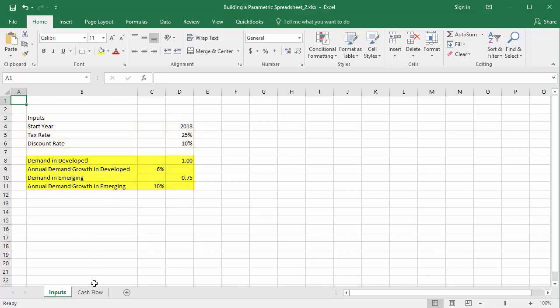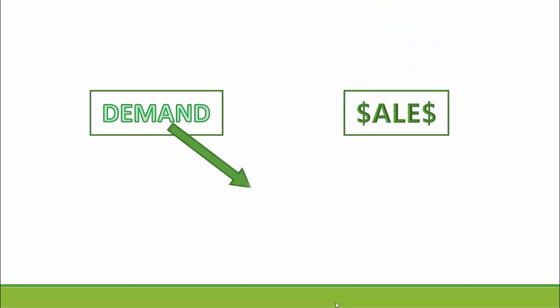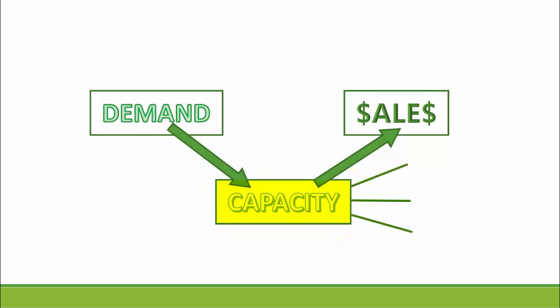Now I'm going to calculate sales from demand. It's important to note that demand is not a direct input of sales — we can only serve as much demand as we have capacity to do so. So next I'll incorporate capacity into the spreadsheet, which is uncertain. In fact, it's a decision that I'd like to optimize.